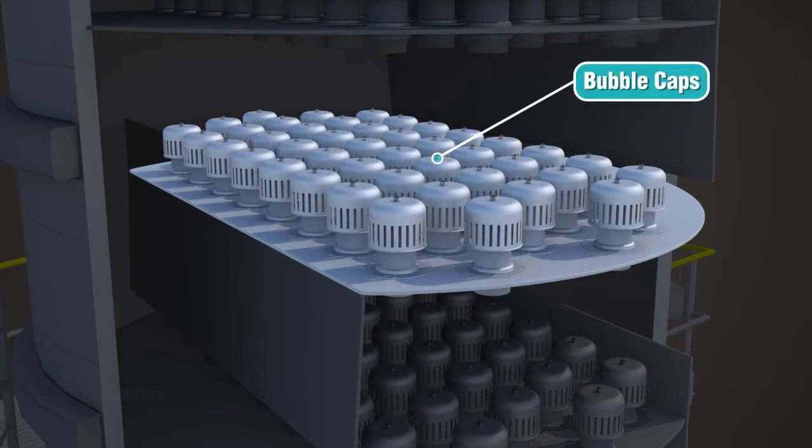The bubble caps direct the rising vapor into the liquid, while preventing the liquid from falling through the holes onto the tray below.